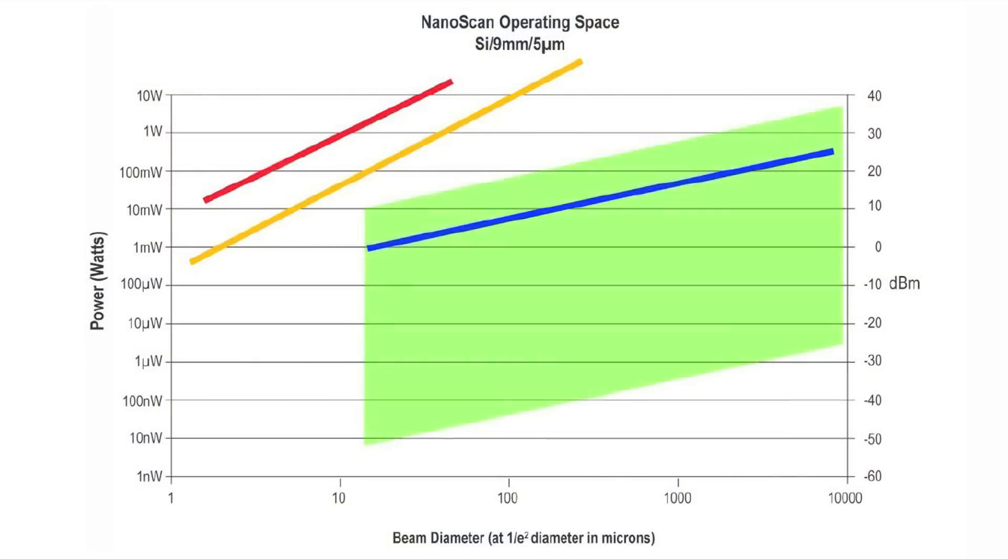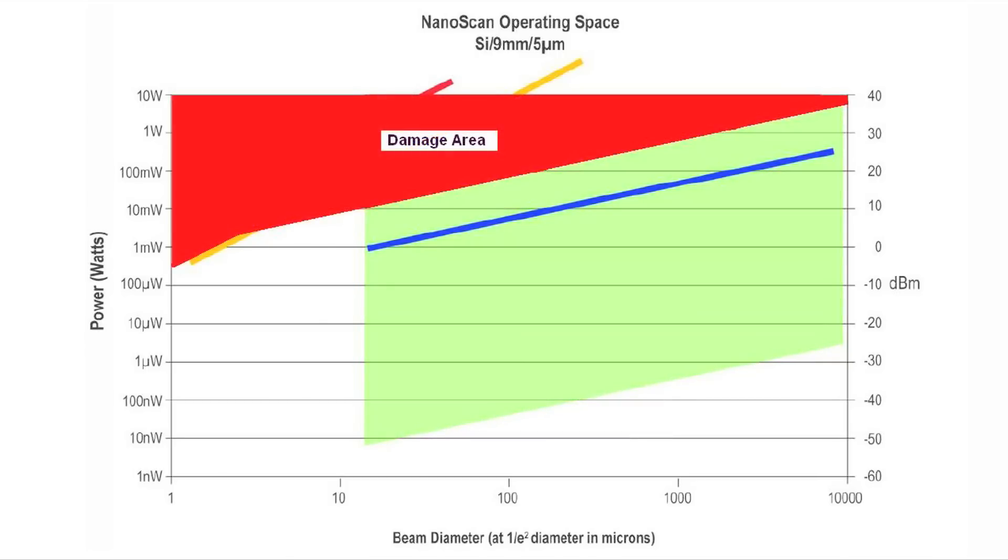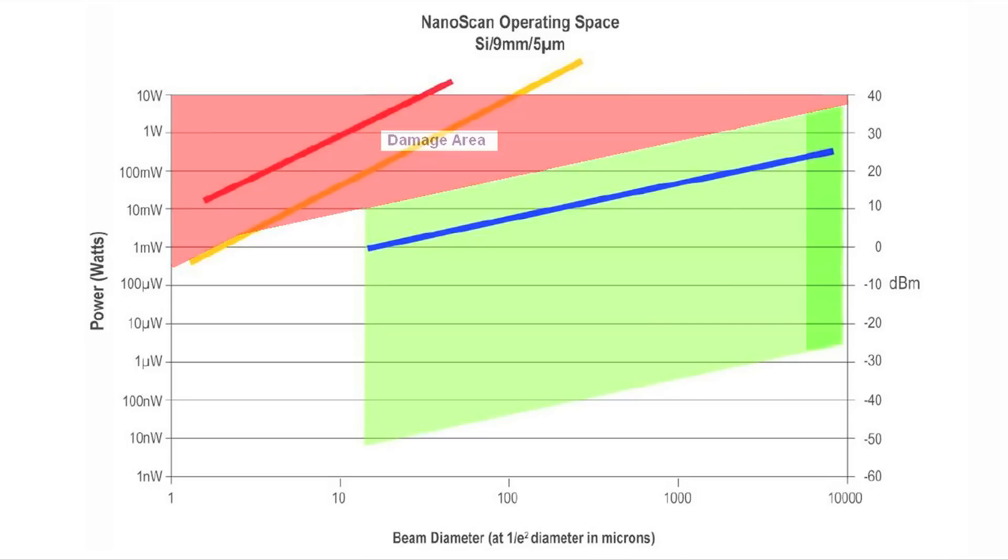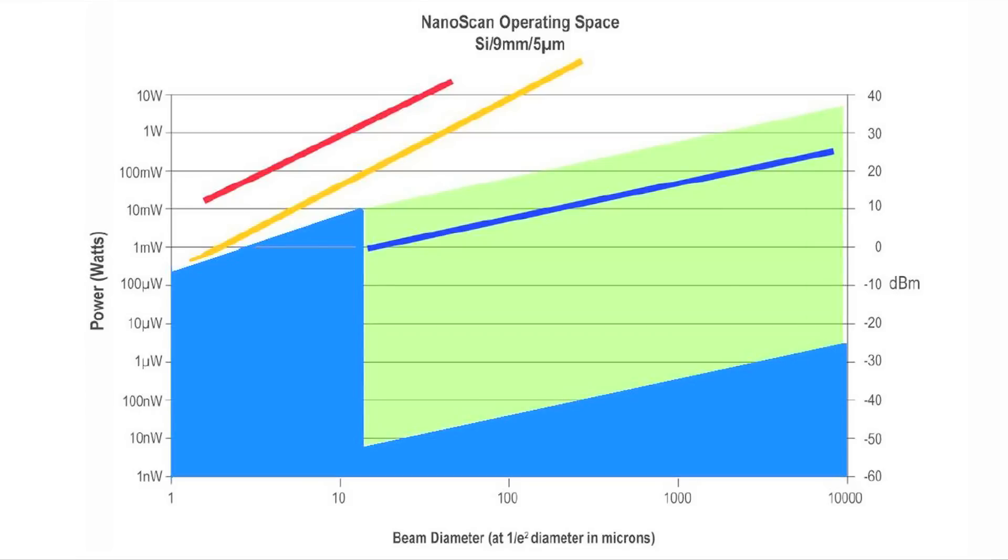Operation outside of the green area means that the nanoscan will not be measuring properly. If you're above the green space, damage can occur. If you operate to the right, you'll see saturation, which results in a wrong measurement. Operation below or to the left of the chart will result in a non-measurement.